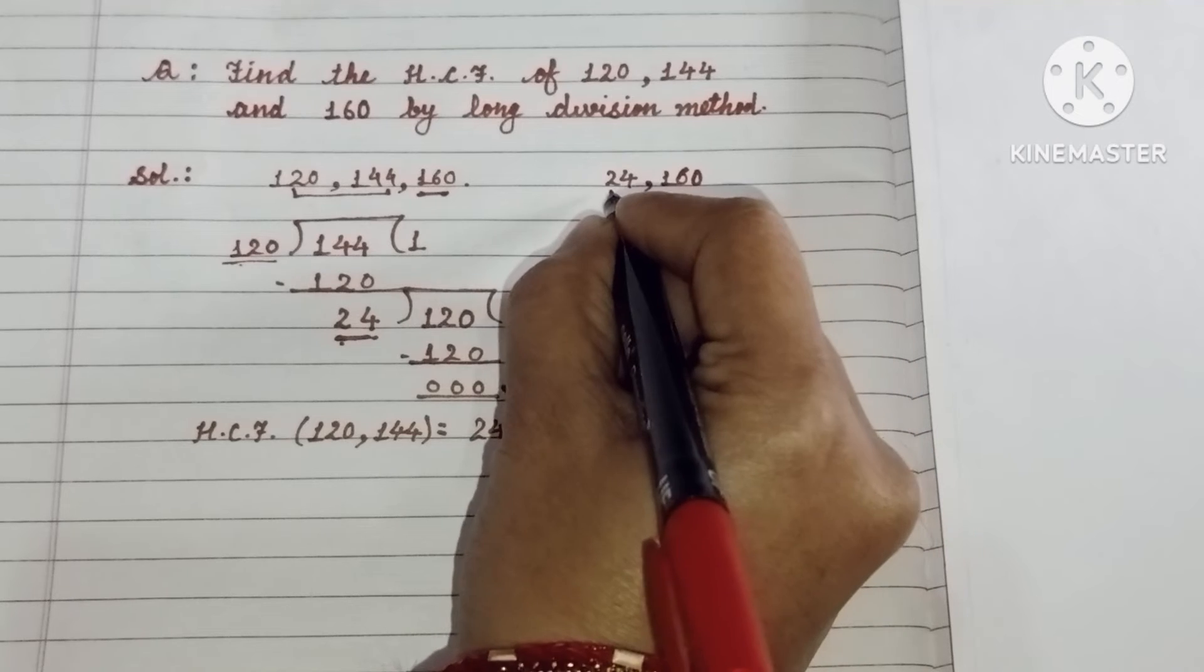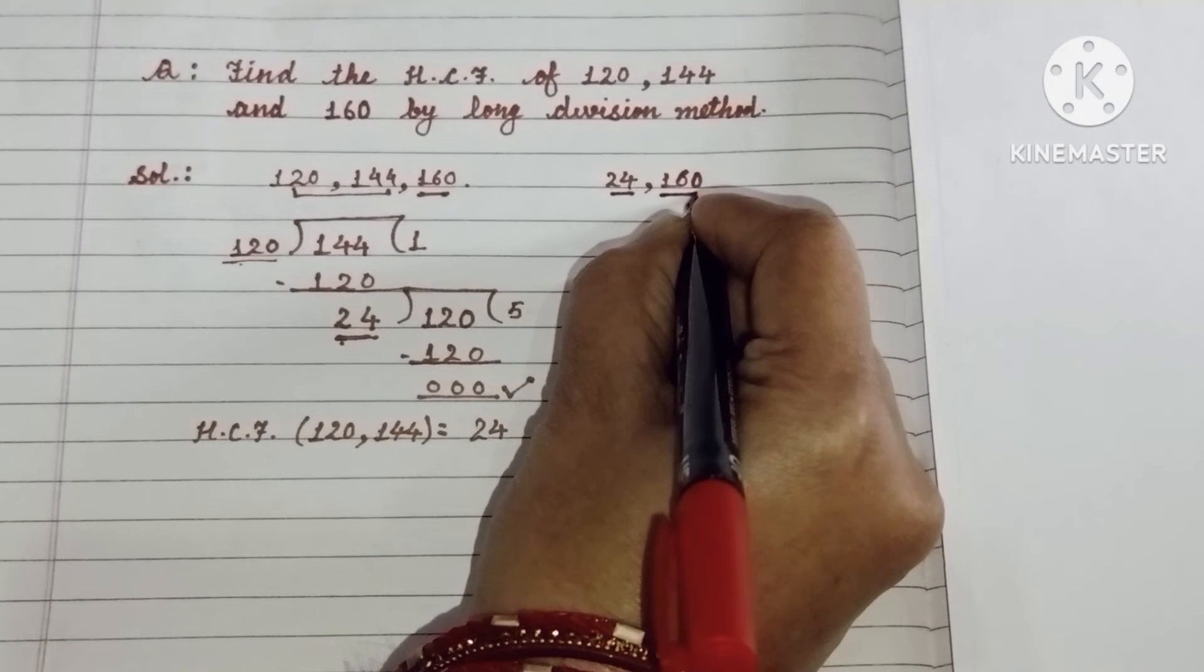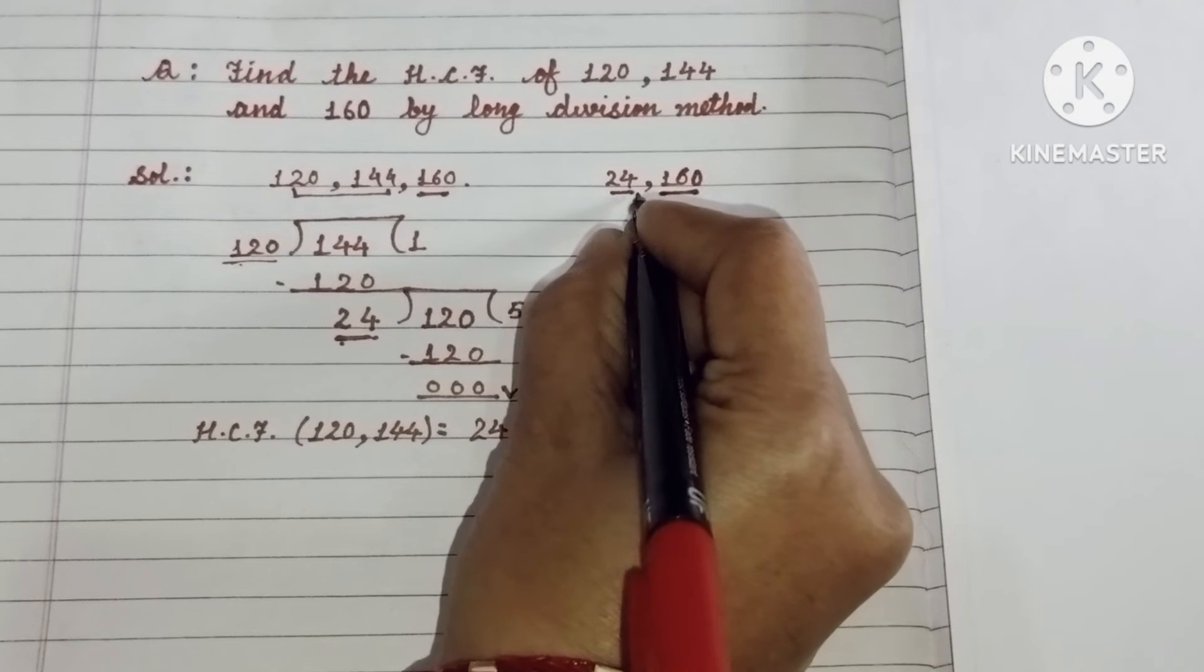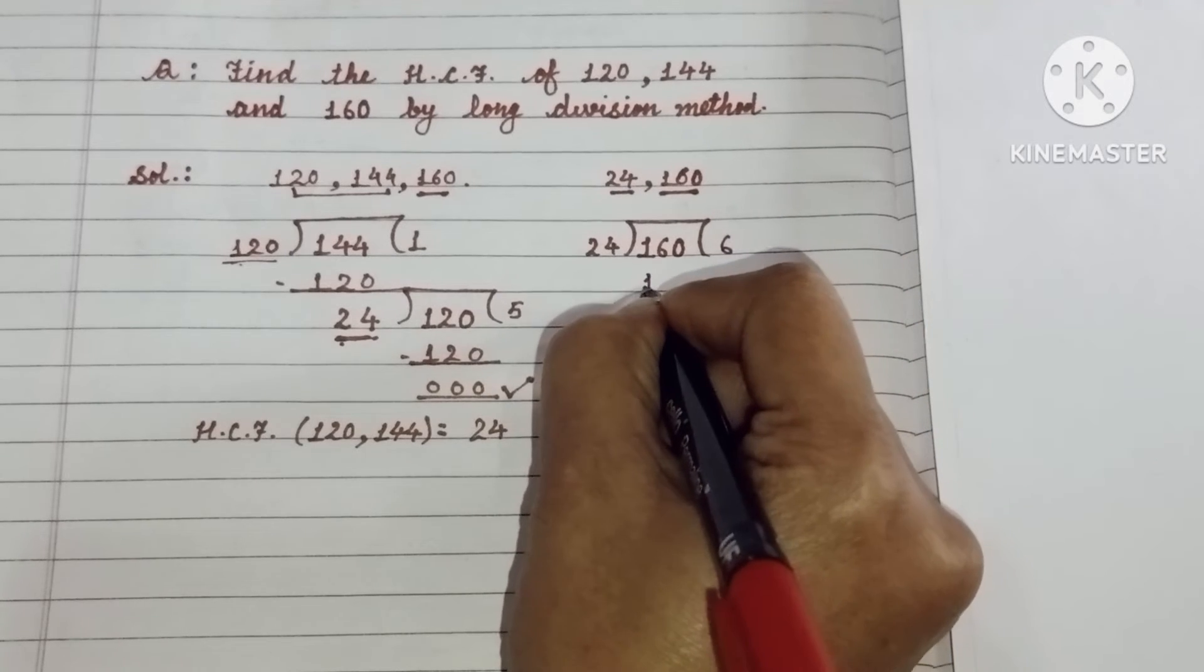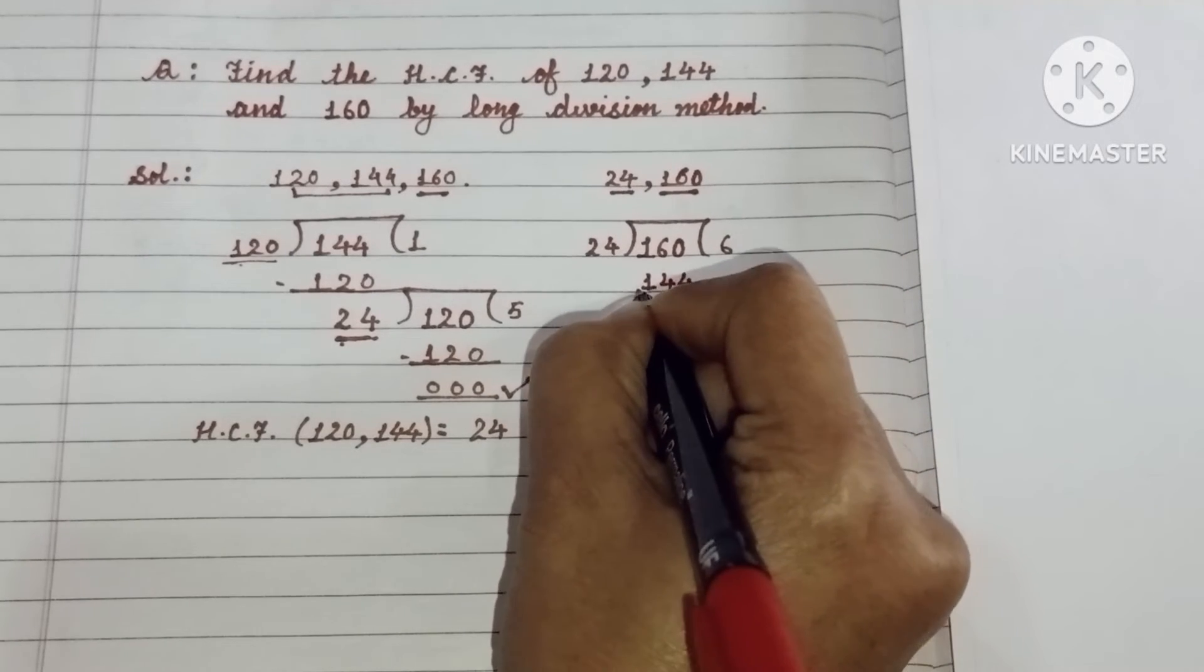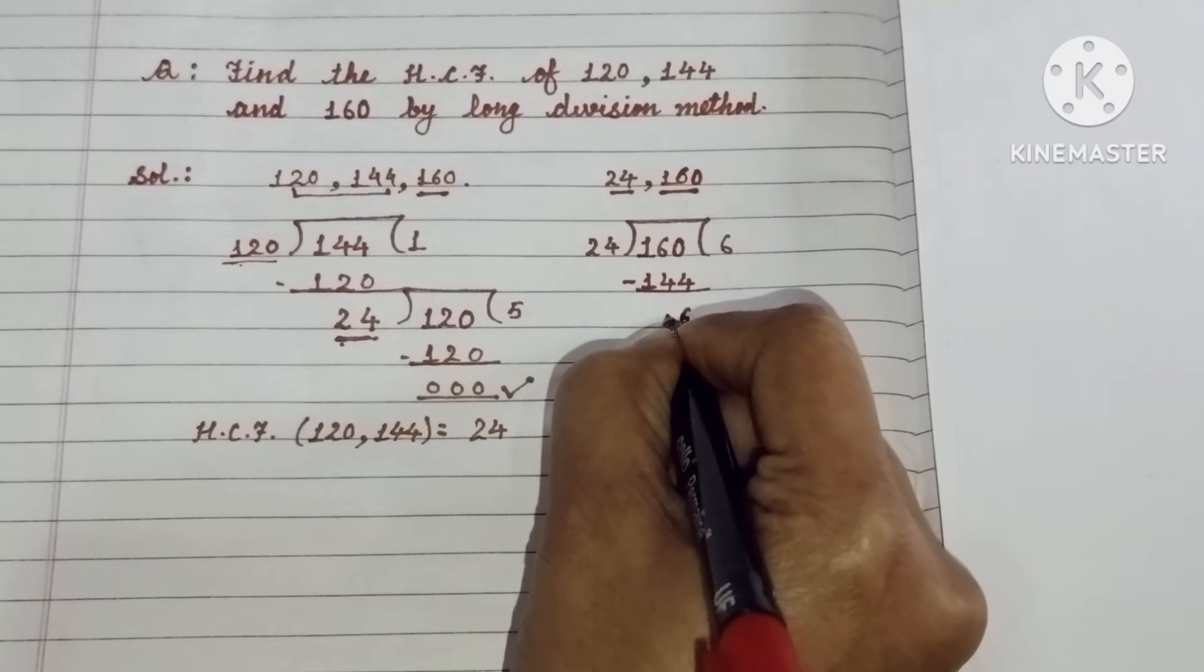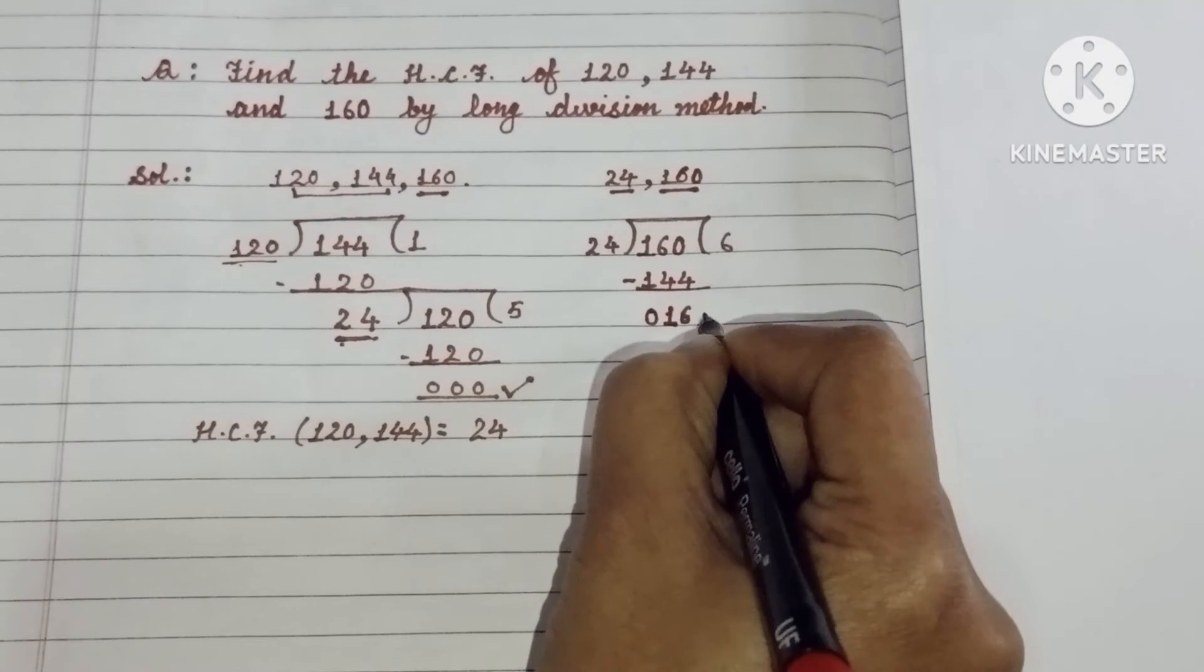Now among these two numbers, 24 is the smallest number and 160 is the greatest number. So we have to divide this 160 by the number 24. 24 seksa 144. Now subtract this 144 from the number 160. 10 minus 4, 6. And 5 minus 4 is 1. 1 minus 1, 0. Clear bita?